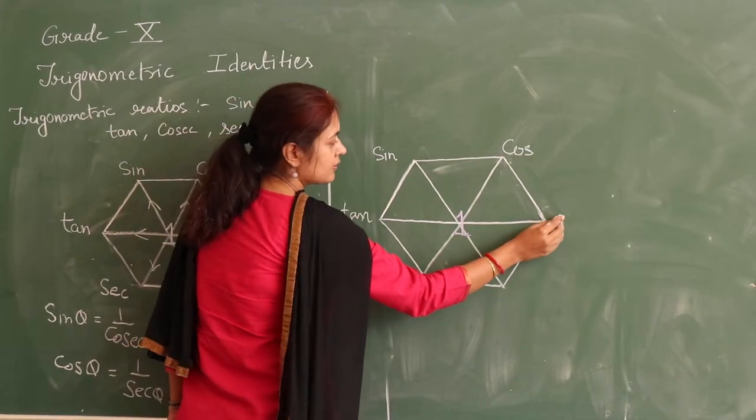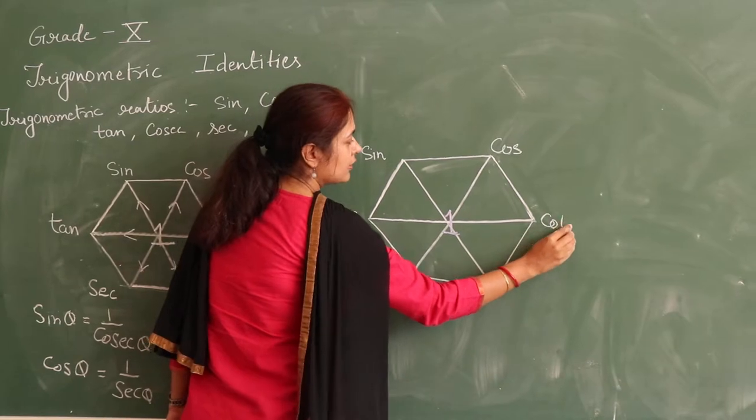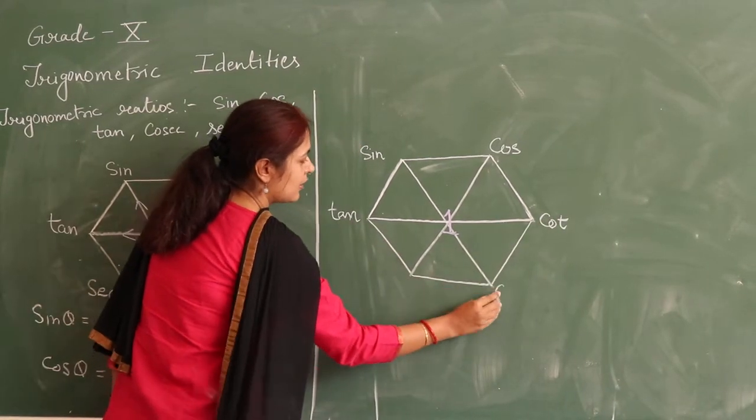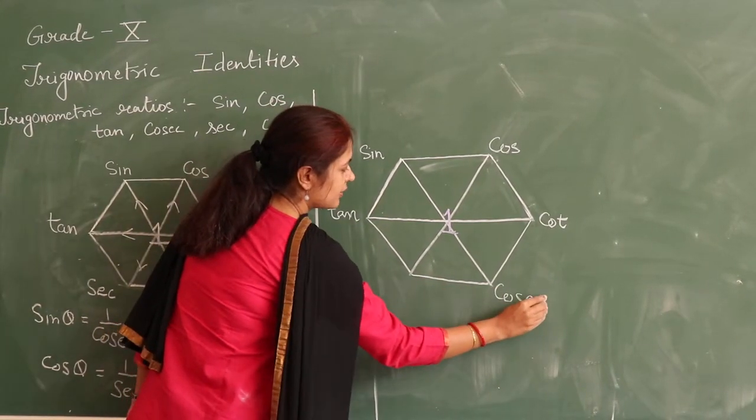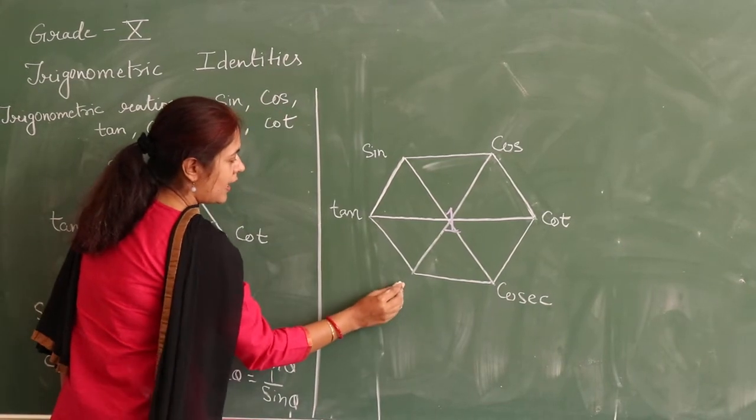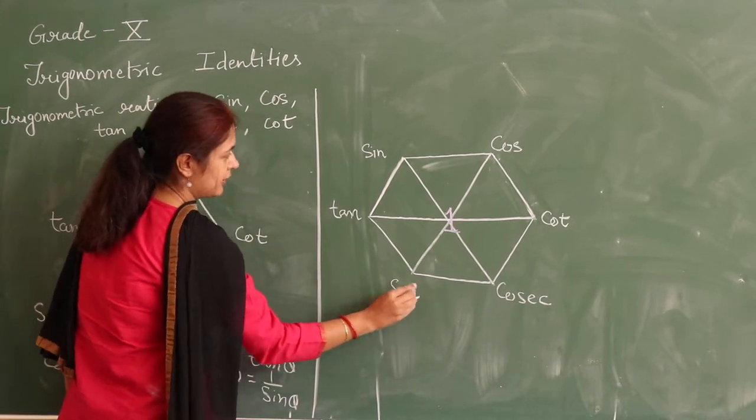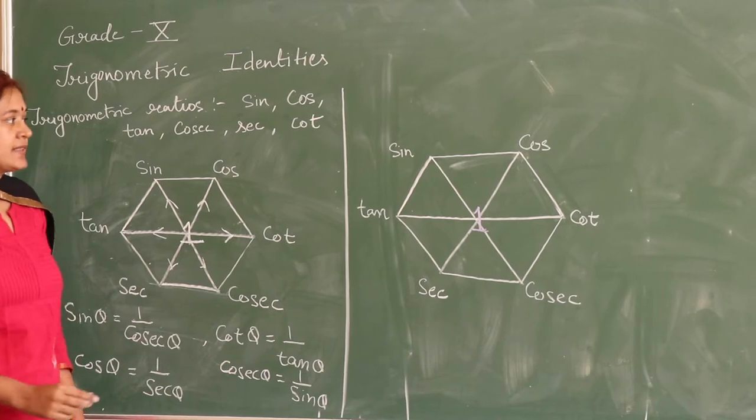on the next vertex, cot on the next, cosec here, and sec here. Now we learn the next set of identities.